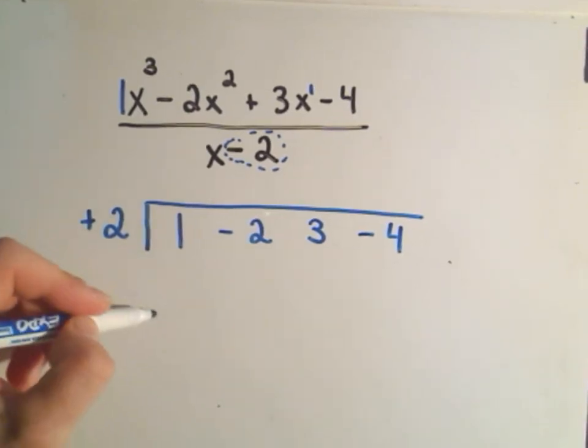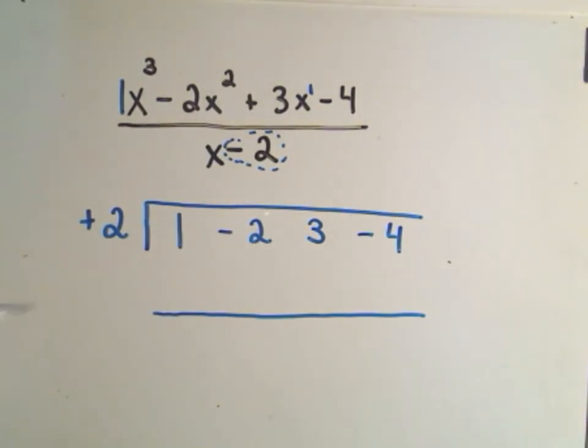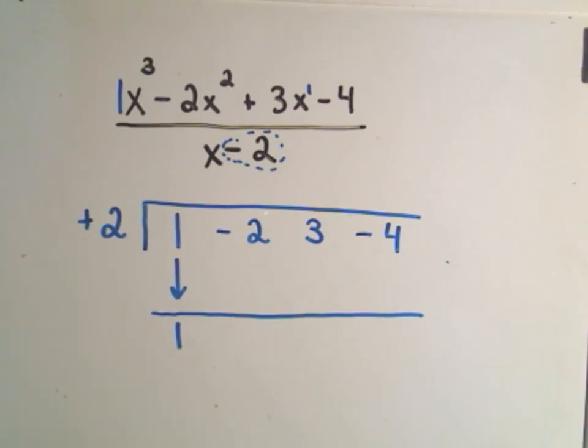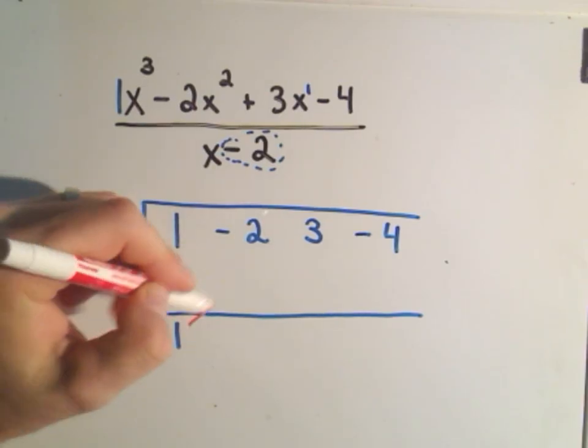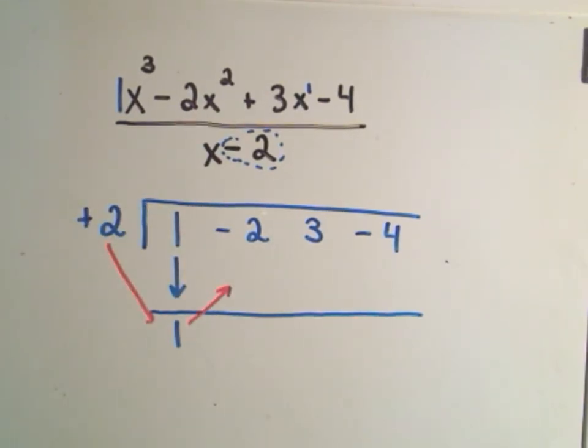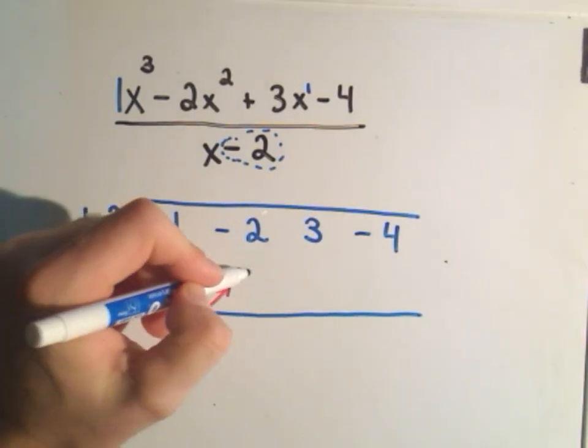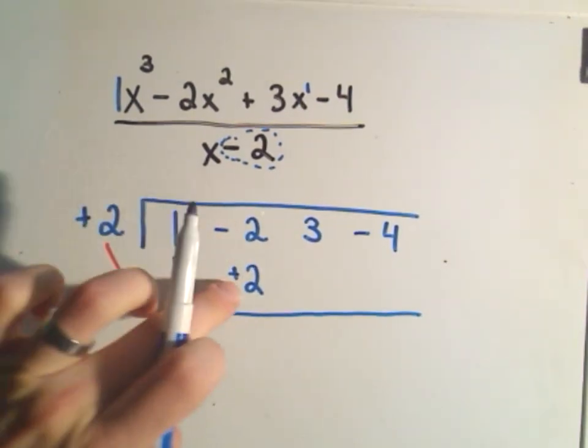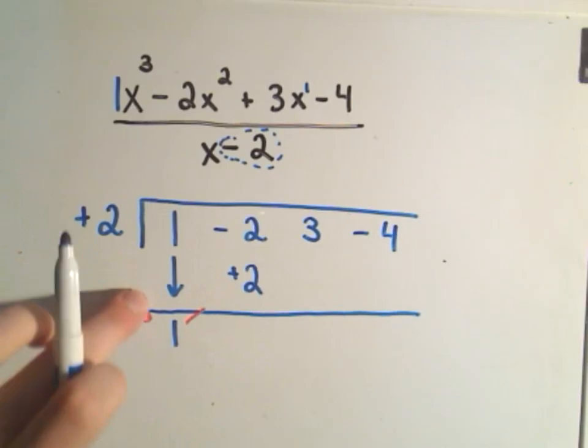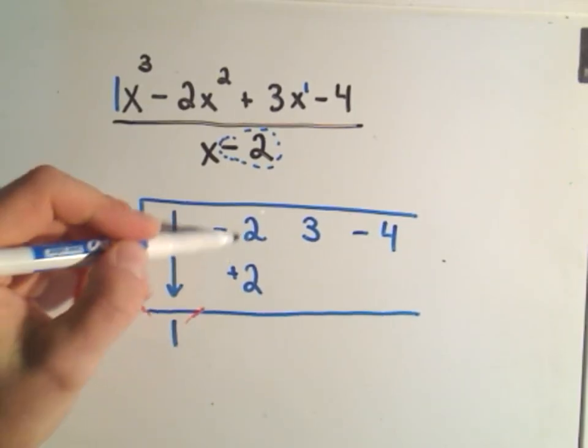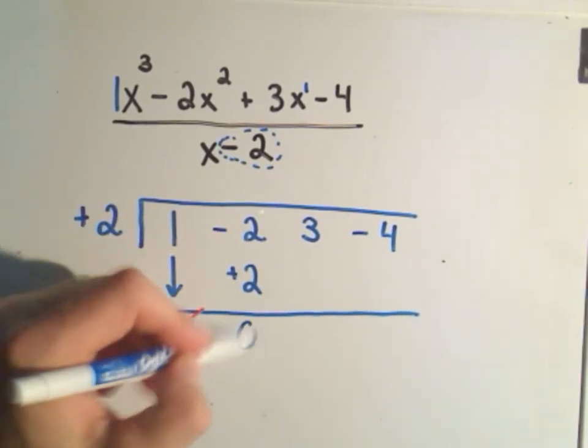And with synthetic division what you do is the first term you just drop it right down. There's nothing to do. And then the idea is we multiply. So I'm going to take positive 2 times 1 and then stick that number in the next spot. So positive 2 times 1 will give us positive 2. And then what we do is we add those numbers together in this column. So negative 2 plus 2 is going to give me 0.